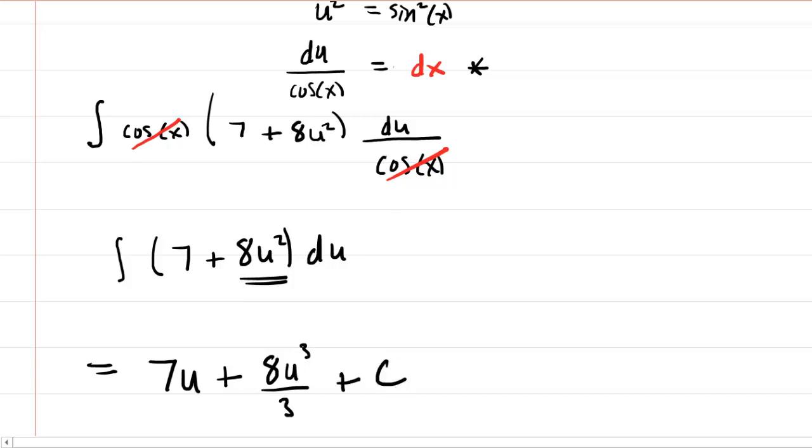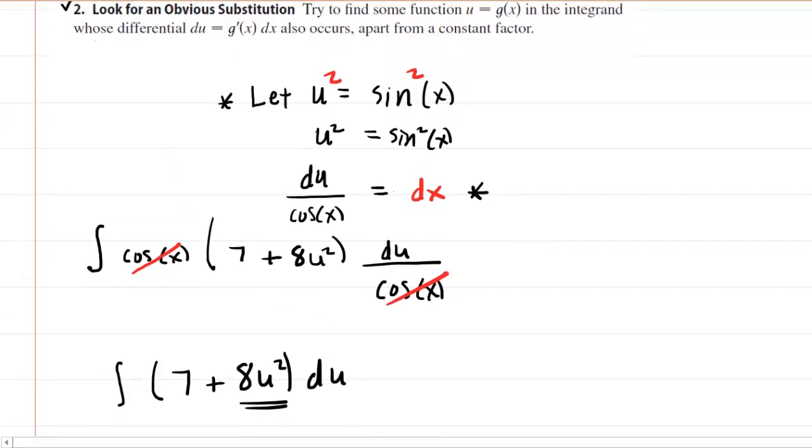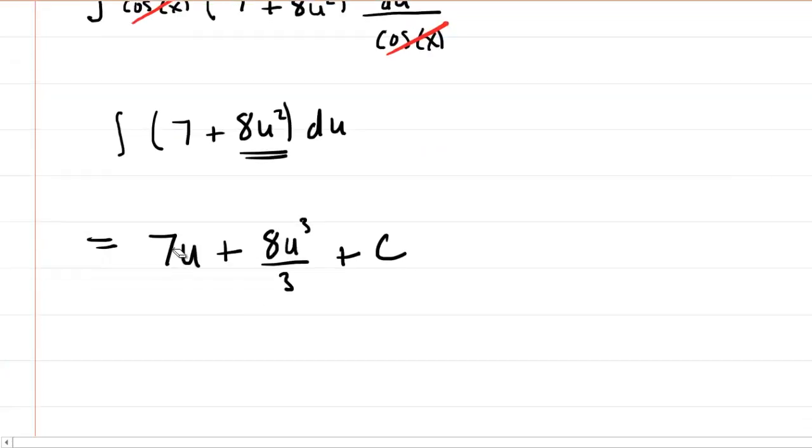The last thing we need to do is go back and remind ourselves that u was equal to sin(x). We don't want to leave our answer in this form because it's written in terms of u. We need it back in terms of x, so we'll replace each of the u's with sin(x). Notice that the u³ will be written as sin³(x). This completes the answer to this integral.